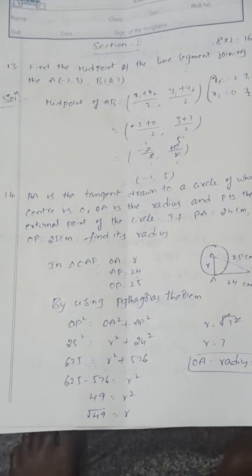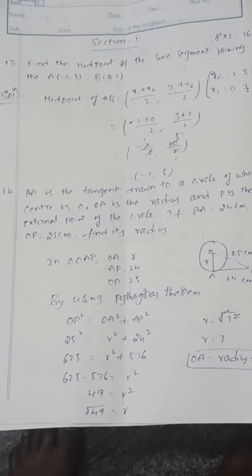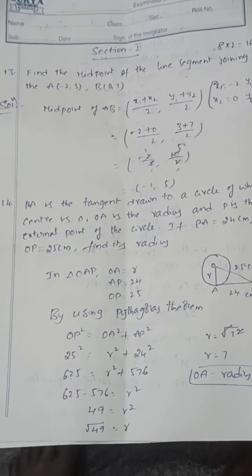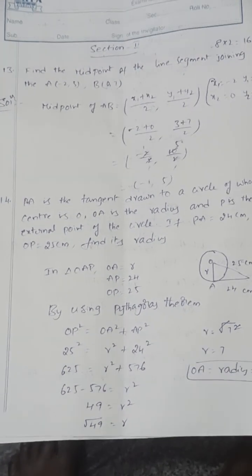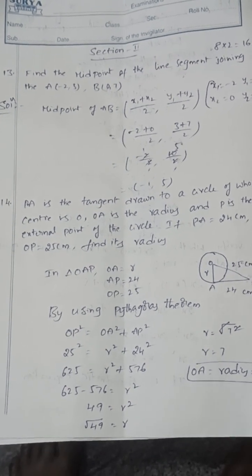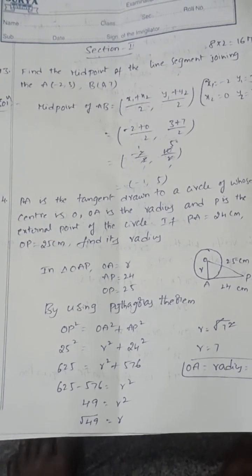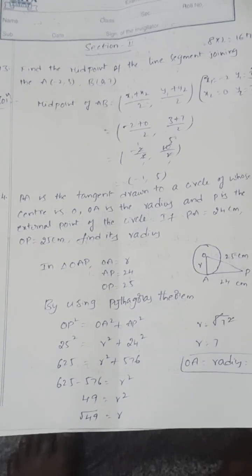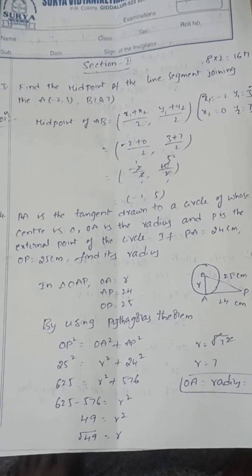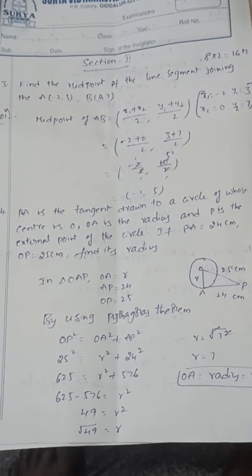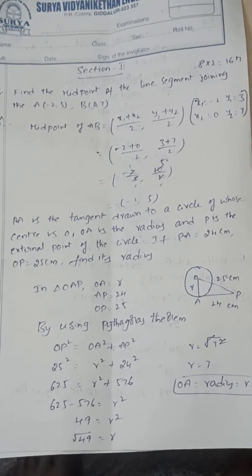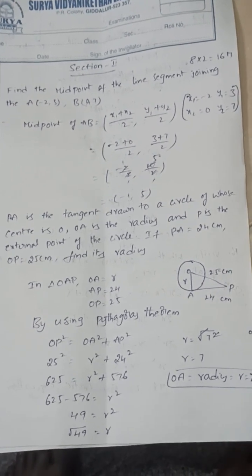PA is a tangent drawn to a circle whose centre is O. OA is the radius and P is the external point. If PA = 24 and OP = 25, find the radius. Since AP is a tangent at A, the angle at A is 90°. By Pythagoras' theorem, the radius of the circle is 7.